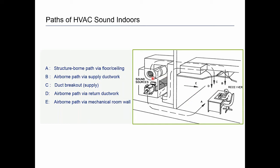The most obvious path is noise coming through the ductwork and passing out through the supply grills, but it can also come out of the return. Sound doesn't care whether it's going out the supply or the return — it will go both ways just as happily. The third way is breakout noise: sound at relatively high pressure moving through ducts can pass through the duct walls, so even a duct passing down a hallway with no local registers can radiate sound into a room. Finally, the structure itself allows noise to pass through it — a combination of airborne and structure-borne paths.